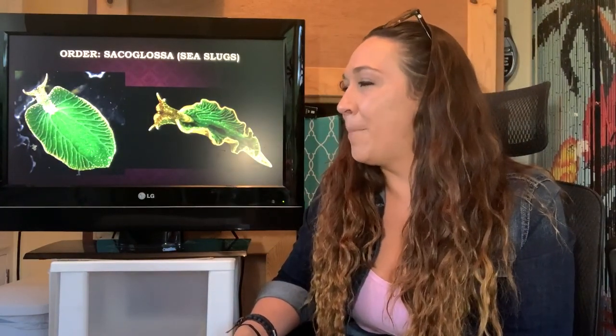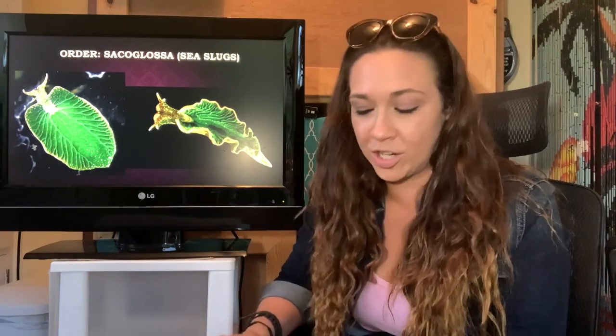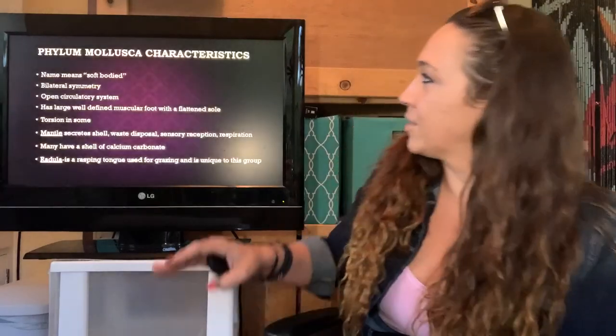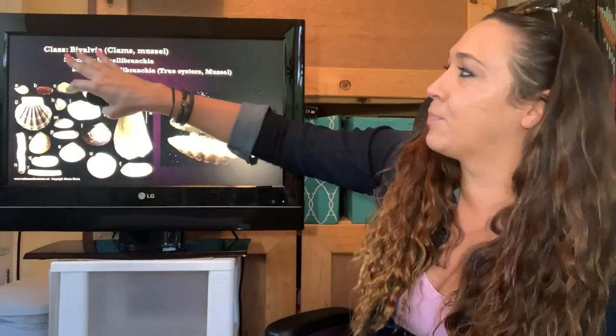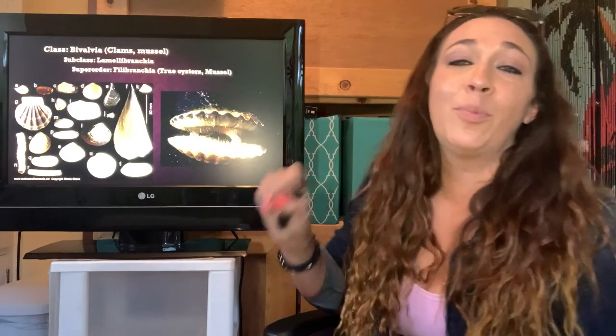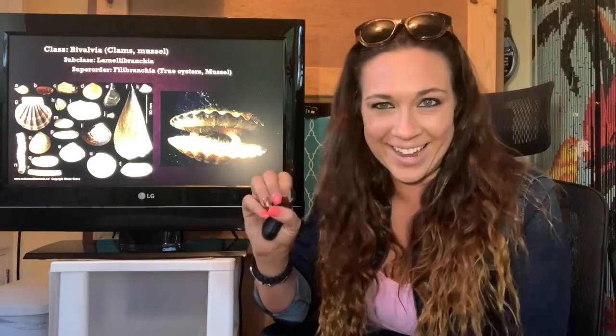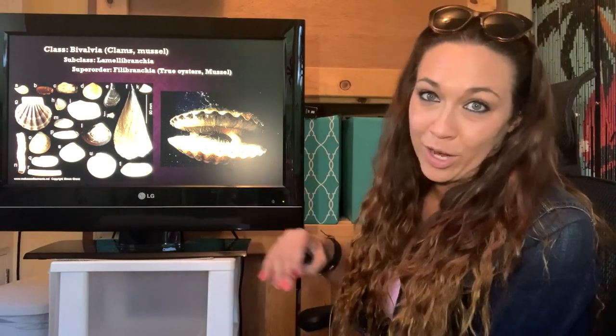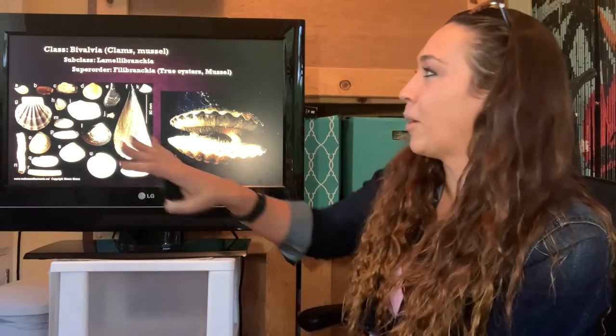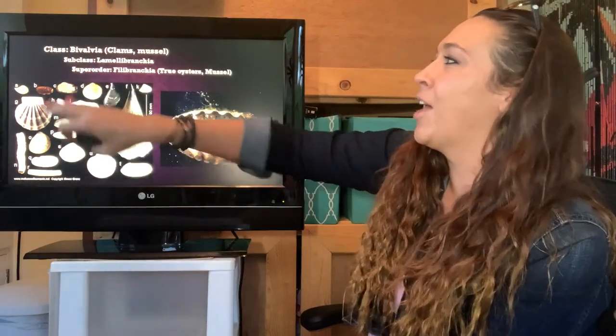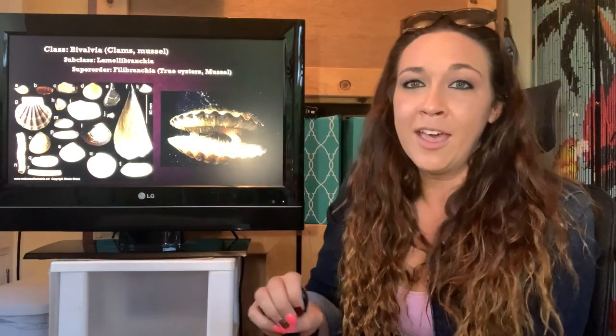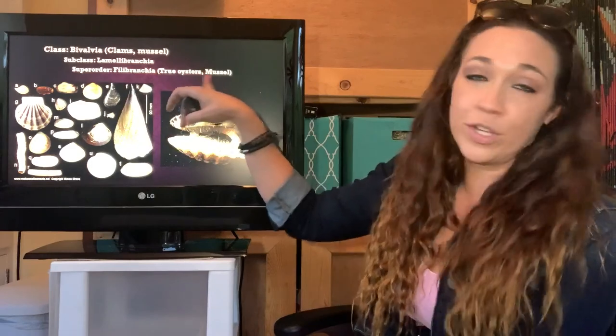This is Sacoglossa — it's an order under class Bivalvia, specifically the subclass Lamellibranchia, super order Ptilabranchia — your true oysters and mussels. Under the order Sacoglossa are your sea slugs. This particular sea slug is unique because that really pretty green inside him is chloroplast — chloroplast absorbed from algae and plants that he ate. He goes around eating algae, takes their chloroplasts, and keeps them inside his cells instead of digesting them.